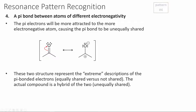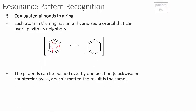Pattern four: a pi bond between two atoms of different electronegativity. Using the carbonyl example, oxygen is more electronegative than carbon, so we can show those shared electrons moving to the more electronegative oxygen — the oxygen hogging those electrons. This is a more extreme version of what the carbonyl looks like; the electrons are unequally shared with more electron density on the oxygen. Pattern five: conjugated pi bonds in a ring. Each sp2 hybridized carbon partakes in a double bond, and we can move all of the electrons one bond clockwise or counterclockwise to form a resonance structure.